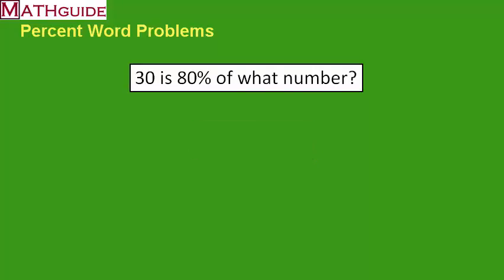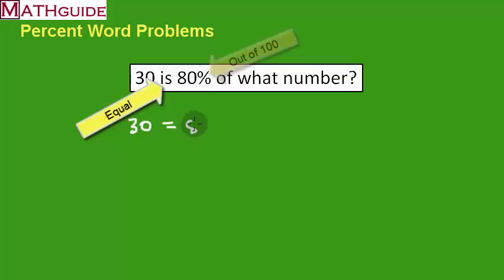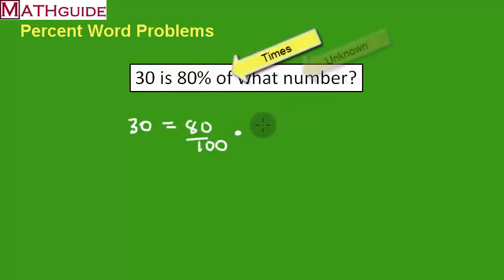Again, we've got some conversions here to do for this problem. 30 is 80% of what number? To do it, let's start converting. So the is is equal. The 80% means 80 over 100. Of means times. What number? That means x. We don't know what number it is. We're going to replace the what number phrase with x.